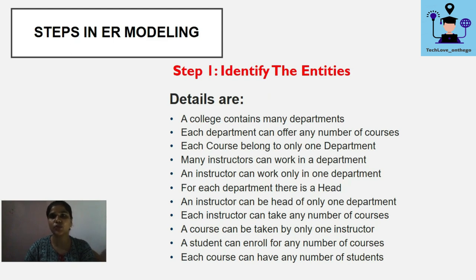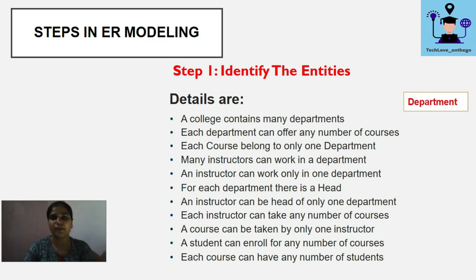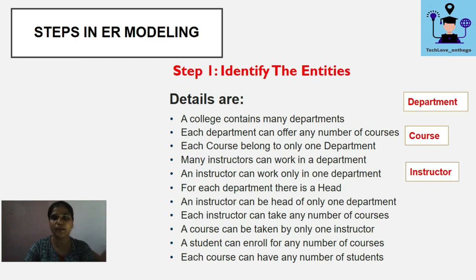Our first step is to identify the entities. In non-technical language, entities are nouns. From the case study assumptions: a college contains many departments, so the first entity is Department. Each department can offer any number of courses, so the next entity is Course. Each course belongs to only one department. Many instructors can work in a department, so Instructor is an entity. An instructor can work in only one department. Note that 'head' is not an entity — it is a relationship.